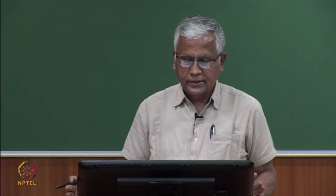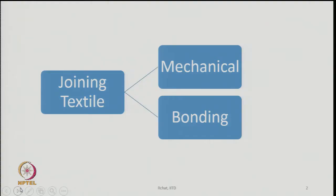Today's lecture is on joining techniques — how textile fabrics are joined together. The products we want to make will often need joinings; sometimes you have to join two pieces, sometimes multiple pieces in layer form. There are basically two ways to join textiles: one is the mechanical way of joining and the other is bonding.